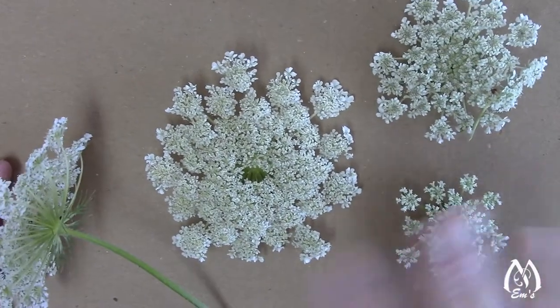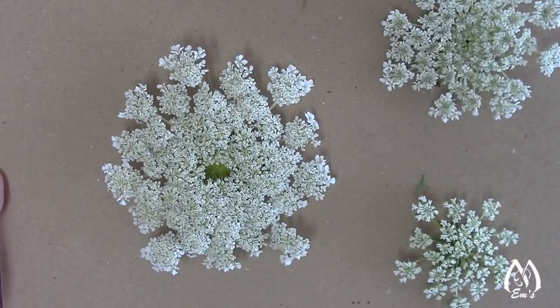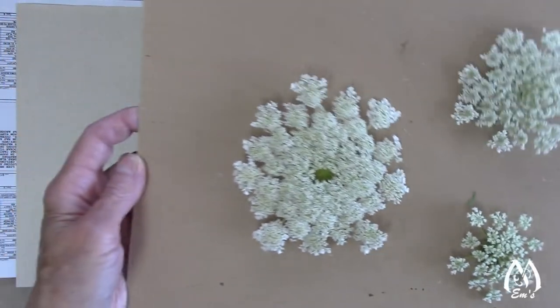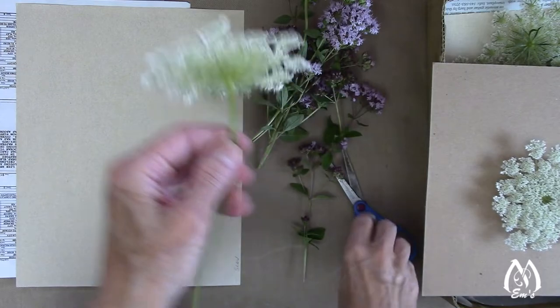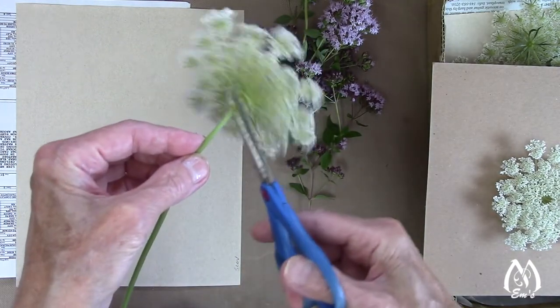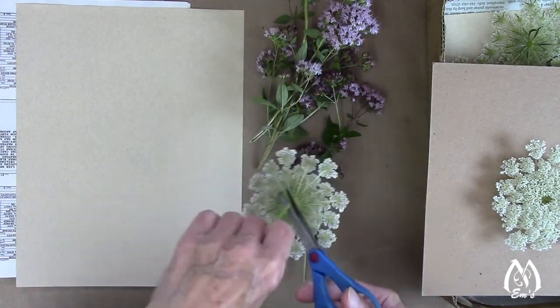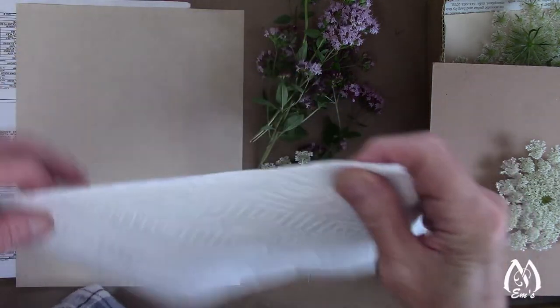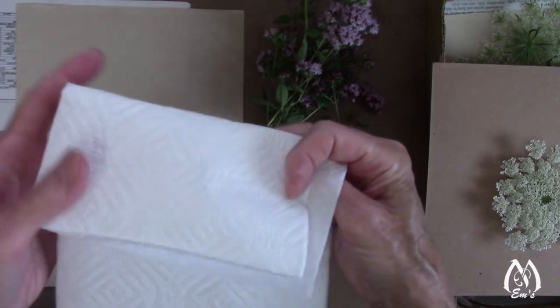And so that way you can get different sizes. I typically press them open face. And then before I press them, here's the stem, I will snip the back of the stem off. And because they're rather, I guess, sappy or resinous in the back, I usually have a paper towel handy.